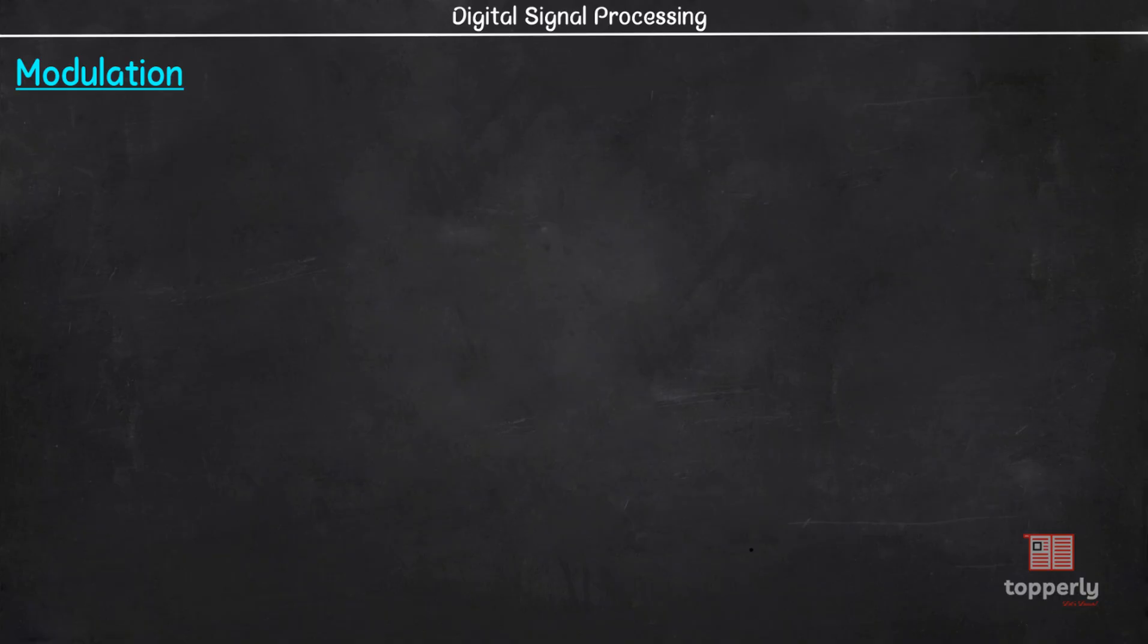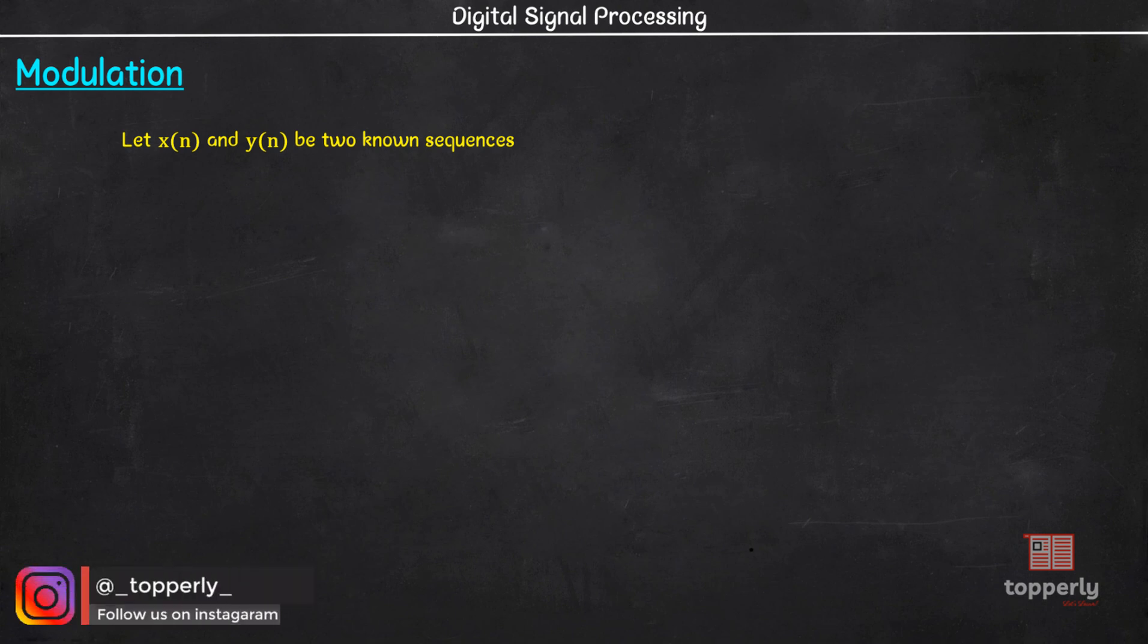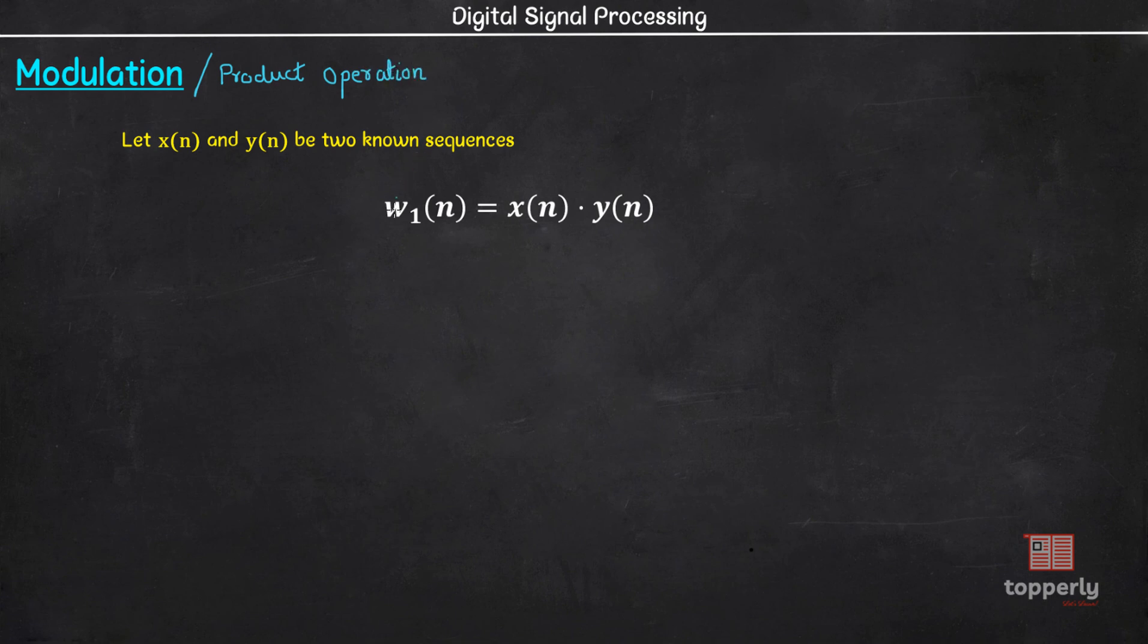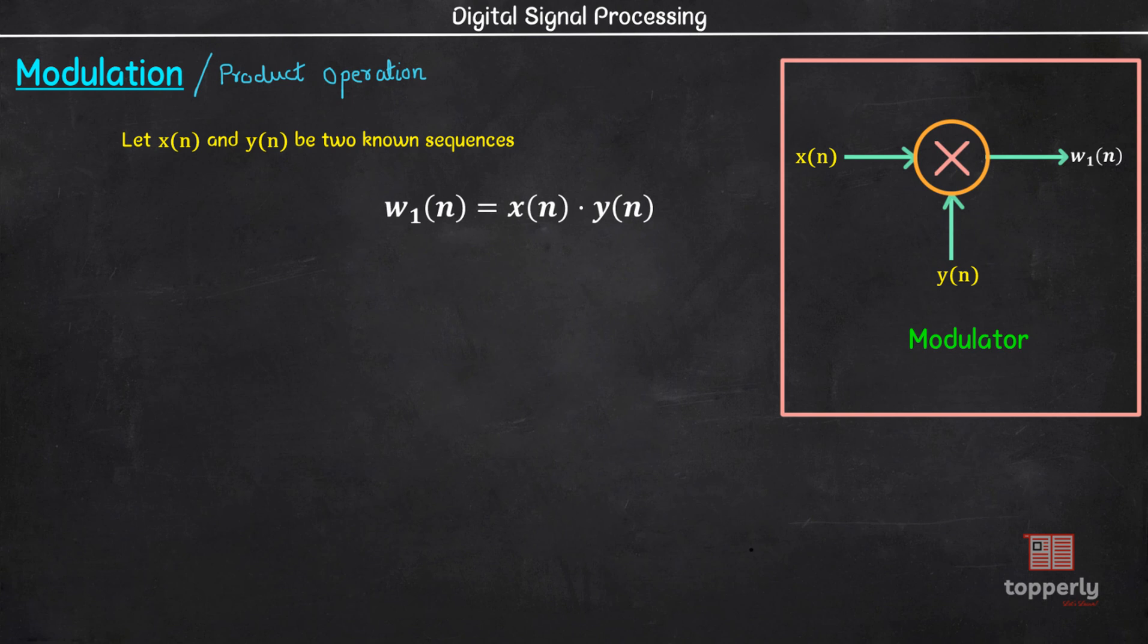The first basic operation is modulation. Let x and y be two known sequences. Then modulation operation is performed to form a new sequence w1 where w1 is the product of the sample values of the sequences x and y at each instance. This operation is also called product operation. The device implementing the modulation operation is called a modulator and its schematic representation is like this.